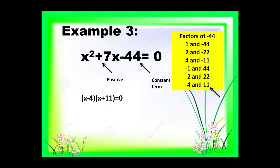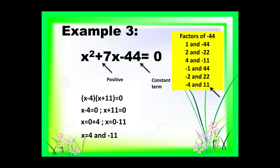So we will be having the quantity of x minus 4 times the quantity of x plus 11 is equal to 0. We need to equate the two factors to 0: x minus 4 is equal to 0, and x plus 11 is equal to 0. Transposing negative 4 and positive 11 to the other side — do not forget to change the sign — we get x is equal to 4 and x is equal to negative 11. The roots of x squared plus 7x minus 44 equals 0 are positive 4 and negative 11.